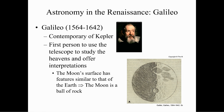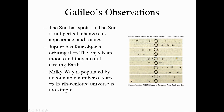Section 2.4: the birth of astrophysics. Here we have Galileo — we watched the movie. Galileo lived between 1564 and 1642. He was a contemporary of Kepler, but most of all he was the first person to use the telescope to study the heavens and offer interpretations.